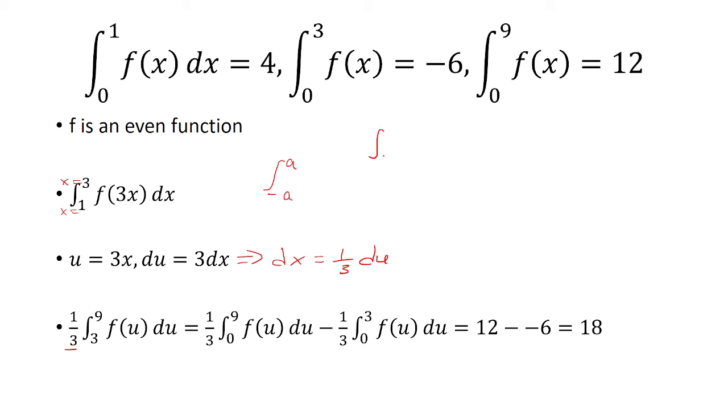Now, one thing to notice is if I go from 0 to 9, that's the same thing as going from 0 to 3 and 3 to 9. So I want to solve for 3 to 9. That means I have to subtract both sides by integral 0 to 3.